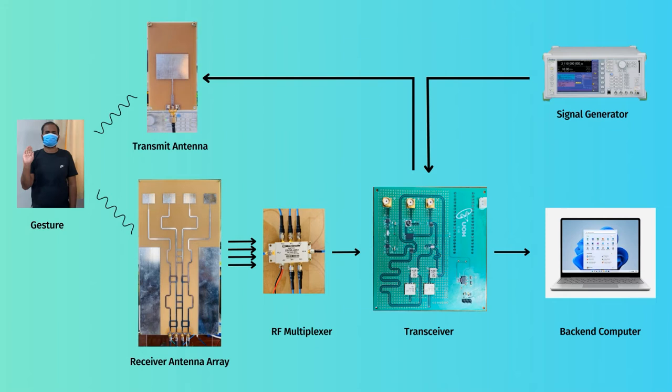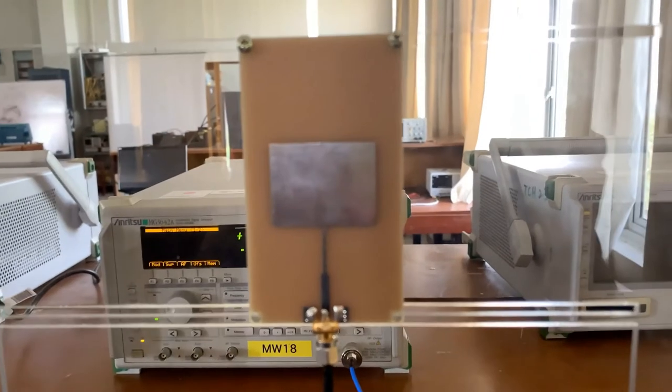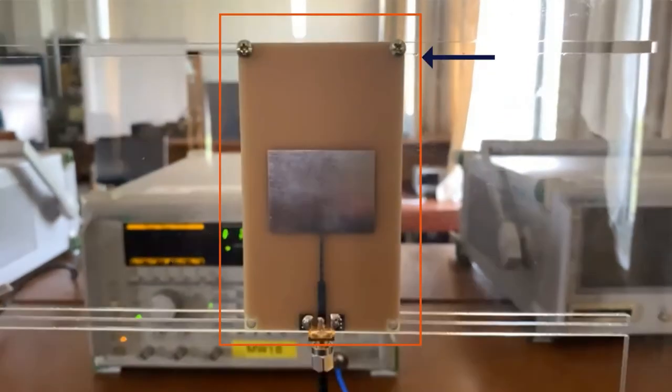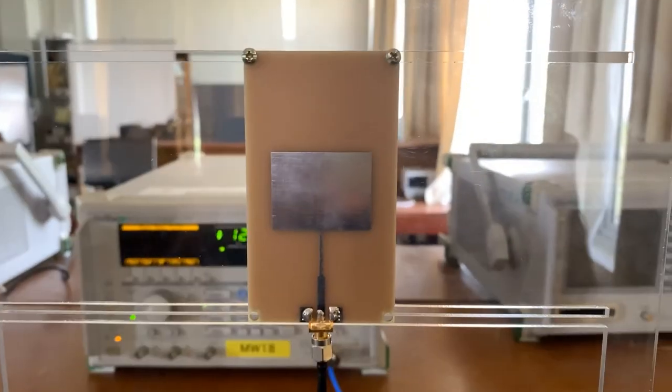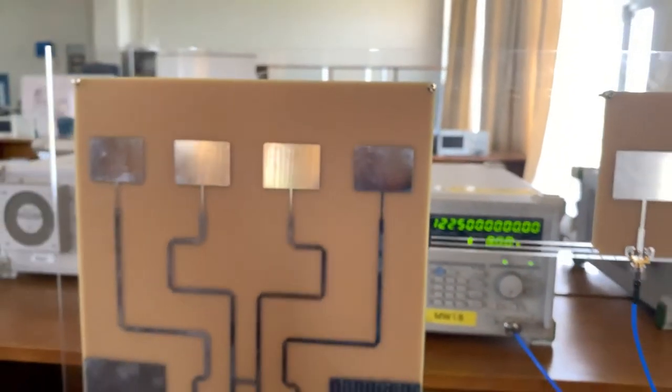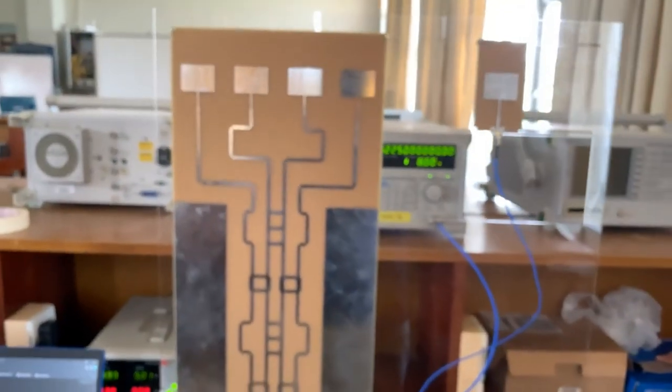Our setup consists of both hardware and software components. There is a patch antenna, which is the transmitter. It resonates at 2.45 GHz, and it is fabricated on a two-layer FR4 PCB.